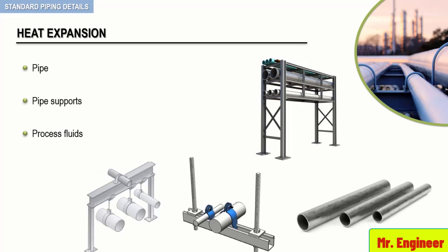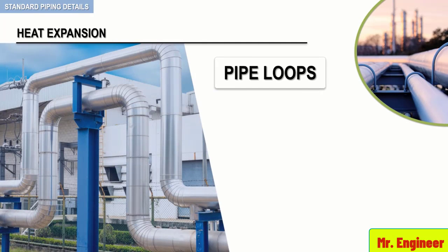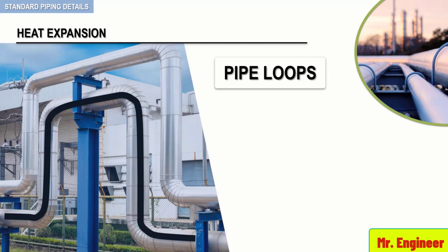To absorb the expansion of pipe in a rack, pipe loops are often incorporated. The following figure shows a pipe loop as a U-shaped routing of the line, designed to contain the expansion of the pipe. Loops are typically located near the midpoint of a long run of pipe. Expansion will cause the two ends of the pipe to grow toward one another, resulting in the distortion of the loop, as depicted here.